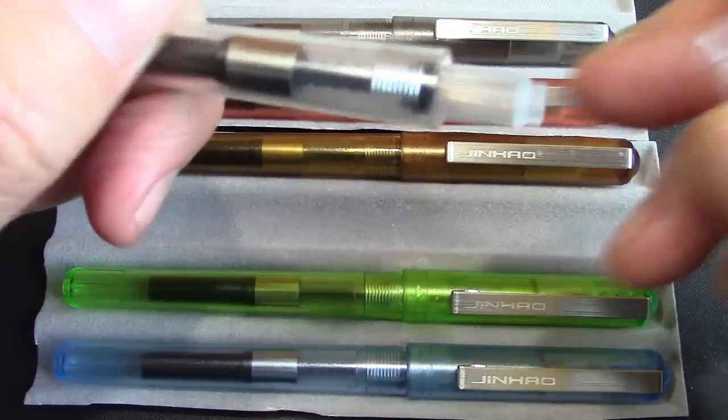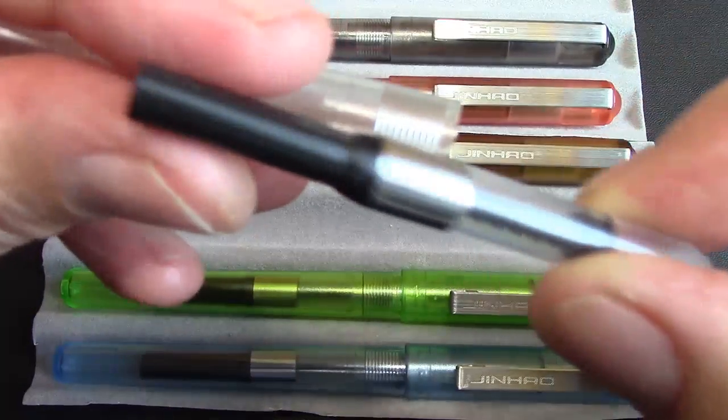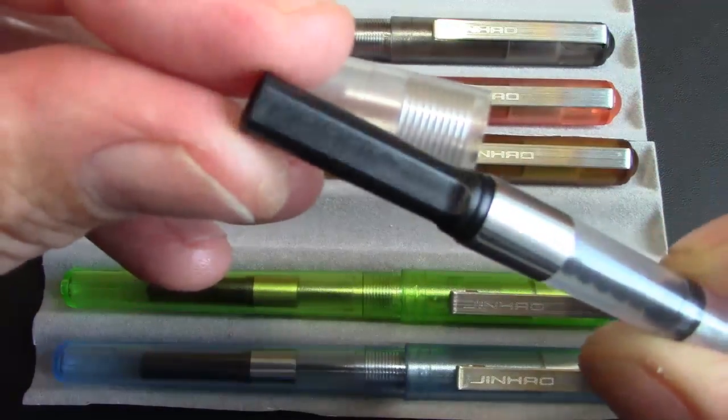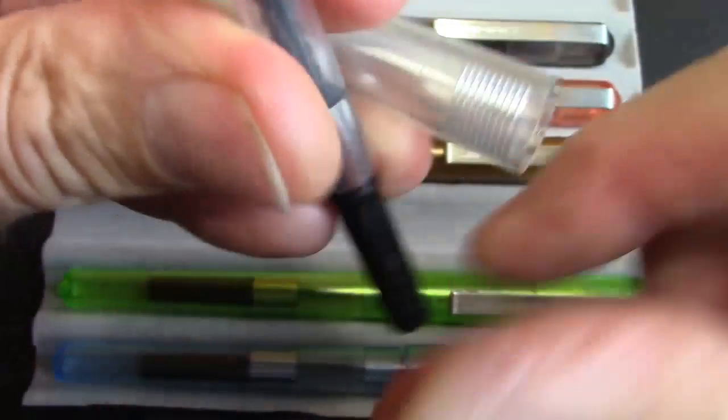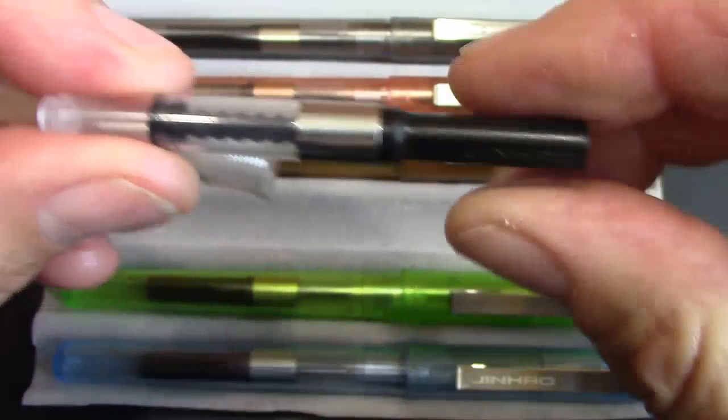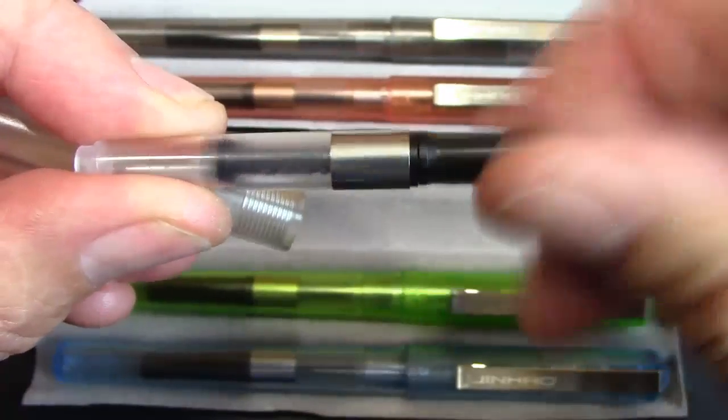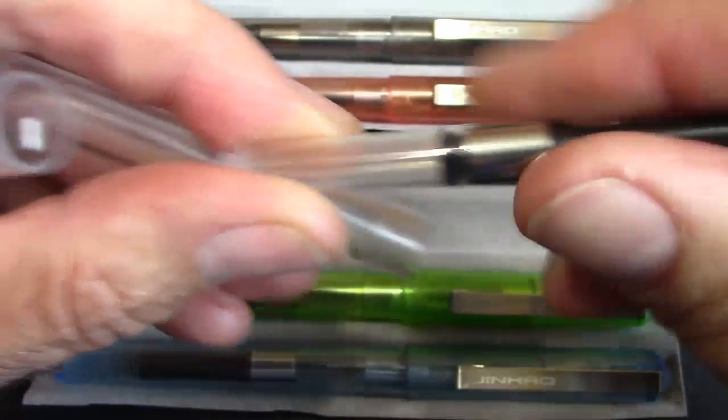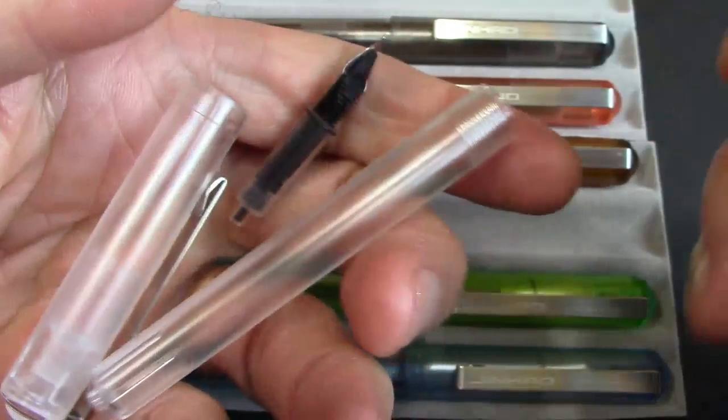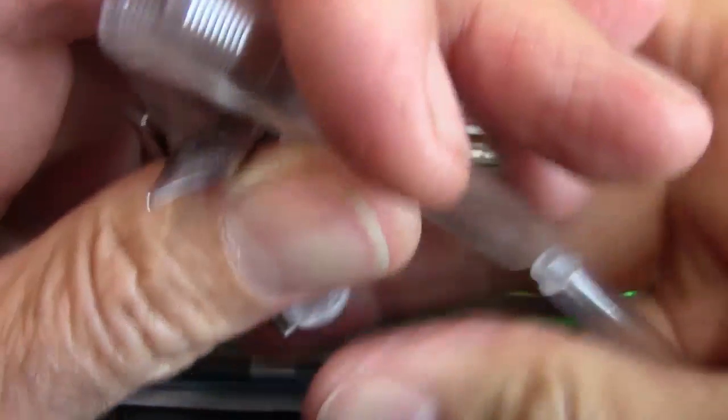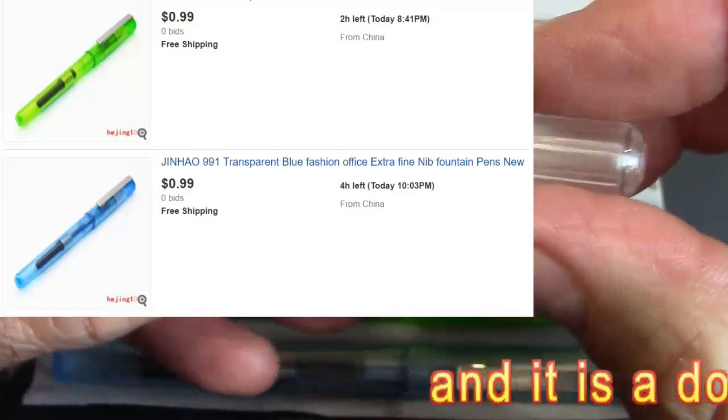And of course, this unscrews. You got your Jinhao converter. I got 6 of them for under $12, so it was under $2 a piece. But when I compare these to the 992s, they just don't have the same feel and quality. This is definitely a dollar pen. That's how I would describe it.